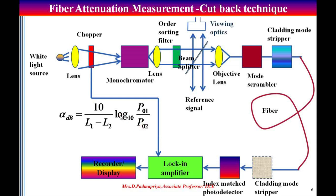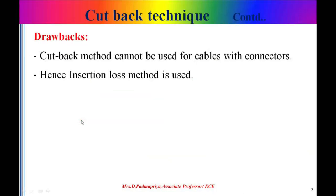The fiber is cut off a few meters from the source and the output power is measured initially. To find the transmission loss, the optical power is first measured at the output end of the fiber. Then the fiber is cut off a few meters from the source and the output power is measured, and the values are substituted in the formula to get the attenuation loss. Here L1 denotes the original length of the fiber, L2 denotes the length of the fiber after it is cut off, P_o1 is the output power at the near end, and P_o2 is the output power at the far end. Using this formula the attenuation in decibels can be calculated.